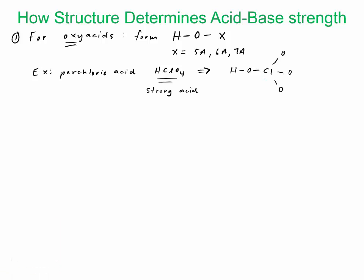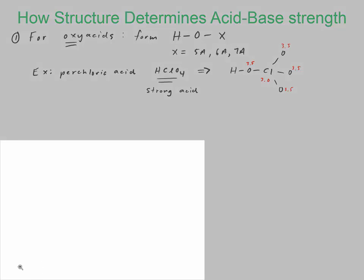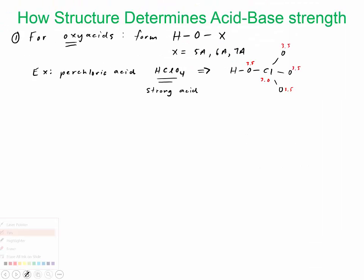It's because chlorine has a pretty high EN—about 3.0—and all these oxygens are 3.5. What it does is it draws the electrons away from the H-O bond. These arrows show the electrical pull on the electrons away from hydrogen, so the bonding electrons are shifted towards the oxygen.